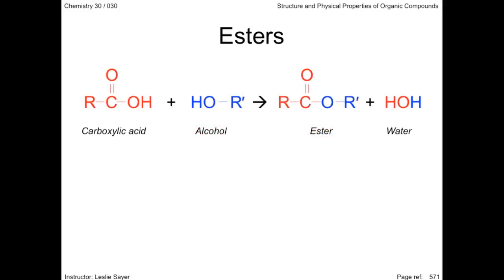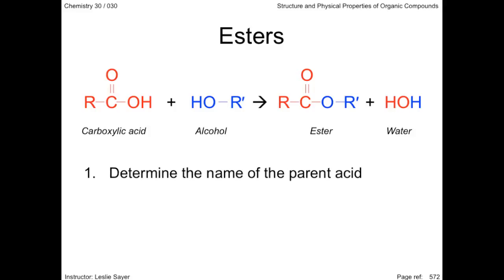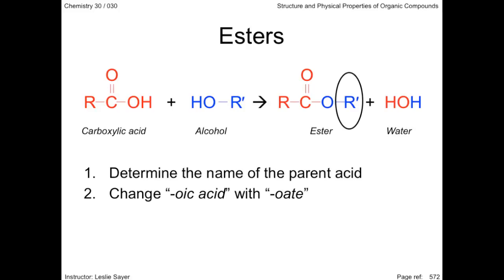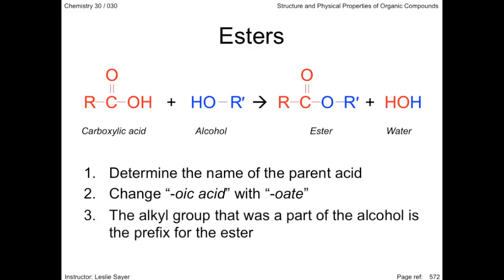Esters are products of the combination of a carboxylic acid with an alcohol. To name an ester, identify the part of the ester with the carbon double-bonded to the oxygen — the part shown in red here. This is the part of the ester that came from the acid. The root name of the ester is based on the name of the acid: remove the 'oic acid' from the name and replace it with 'oate.' To form the prefix, consider the alkyl group that is part of the alcohol — shown in blue here. Ignoring the oxygen, identify the name of the alkyl group; this will be the prefix. There is always a space between the name of the alkyl group and the root.